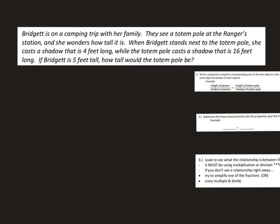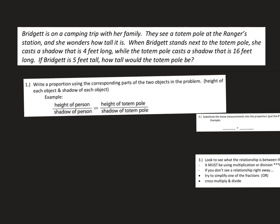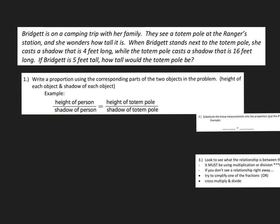So there's a couple different things you can do. I've got a couple steps listed over here on the side. This first one says write a proportion using the corresponding parts of the two objects in the problem. In this situation, we have the height of the person and the shadow, or the height of the object and the shadow. Here's an example: height of person, shadow of person.